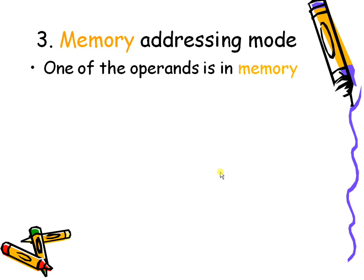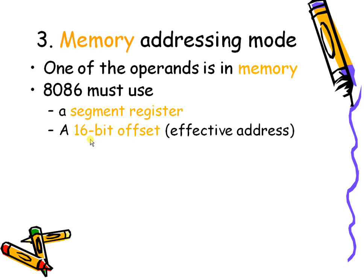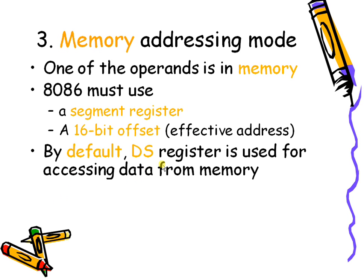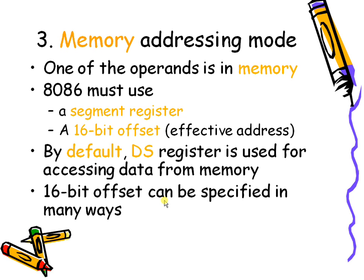In memory addressing mode, one of the operands is in memory. The 8086 must use a segment register as well as an offset register to get the physical address. The offset address is also called the effective address. By default, DS is the register used for accessing data from memory. The 16-bit offset can be specified in many ways: direct memory addressing, register indirect addressing, based addressing, index addressing, and based index addressing.